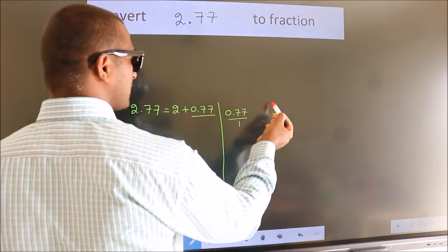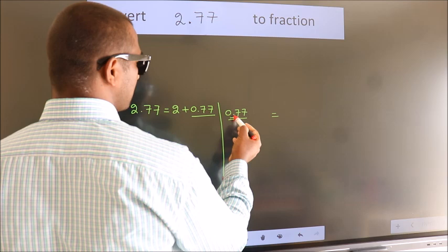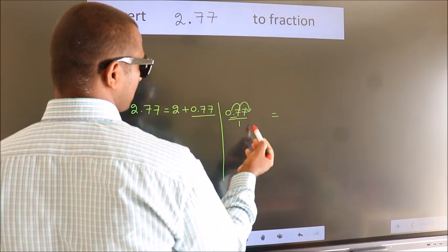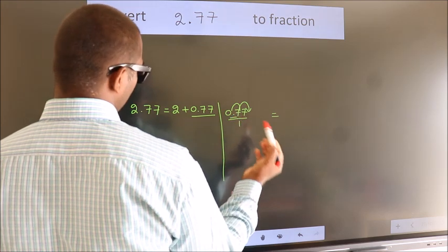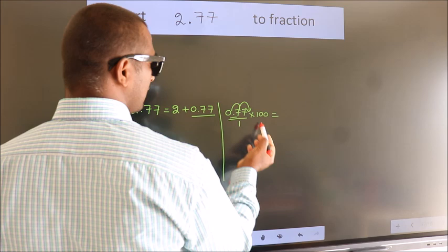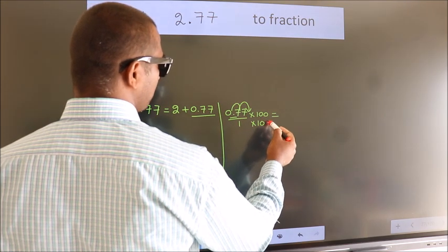To convert to fraction, we have to move this decimal after two numbers. To move this decimal after two numbers, multiply it with 100. Whatever we are multiplying in the numerator, in the denominator also do the same.